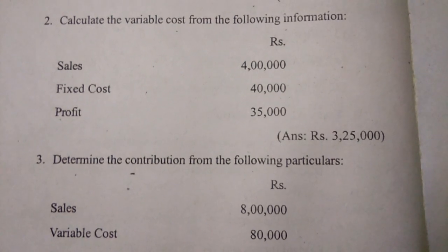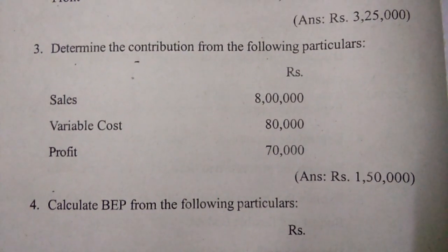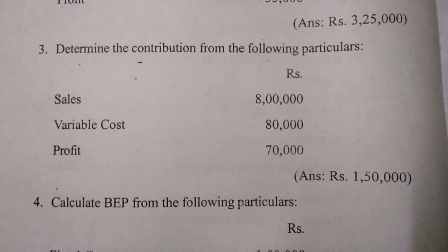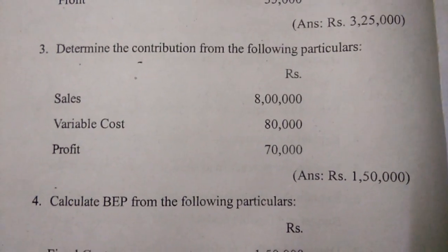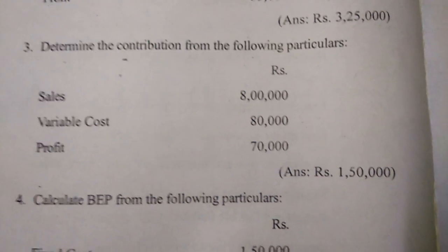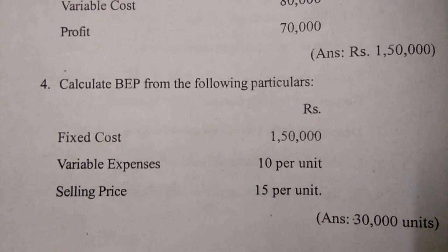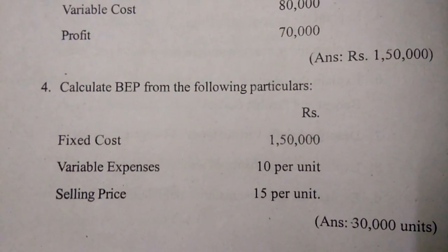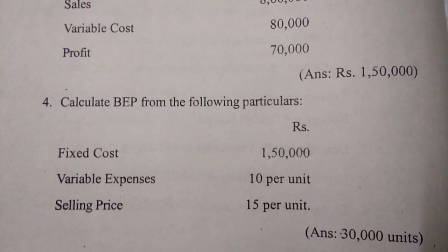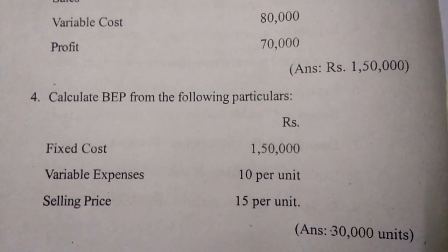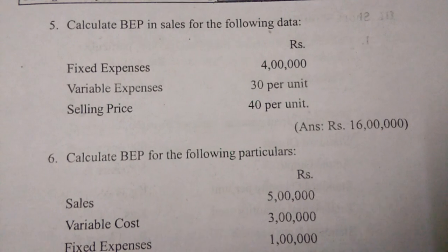Variable cost equals three lakhs twenty-five thousand. Third one: determine the contribution from the following particulars — sales eight lakhs, variable cost eighty thousand, profit seventy thousand — that equals one lakh fifty thousand. Fourth one: calculate BEP from the following particulars — fixed cost one lakh fifty thousand, variable expenses ten rupees per unit, selling price fifteen rupees per unit — that equals thirty thousand units.